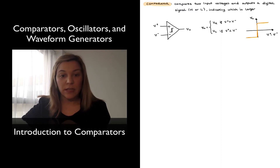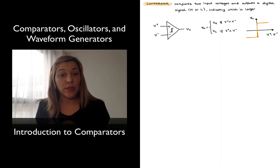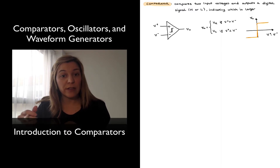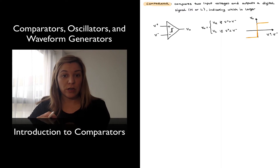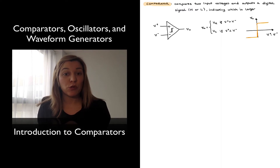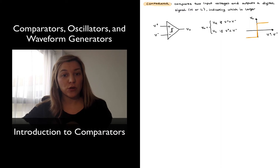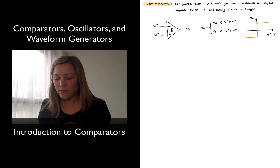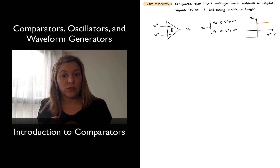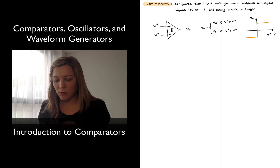That is again in contrast with an op-amp, where we have a linear region where the output signal is proportional to the differential input signal, and we typically connect it using negative feedback in order to ensure a larger transition region. In the case of a comparator, it's the opposite — we want that transition to be as sharp as possible.